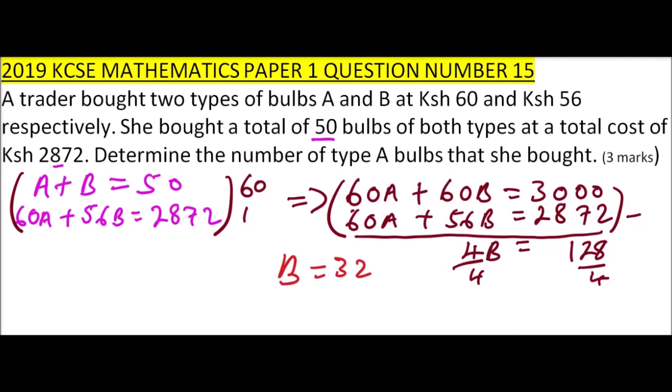Since b is 32 and a plus b equals 50, then a equals 50 minus 32, which gives you 18. So 18 bulbs of type A were bought. That's how you work out that question.